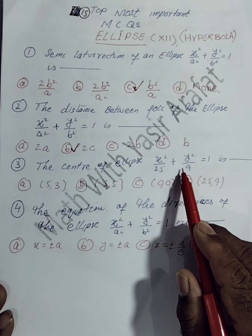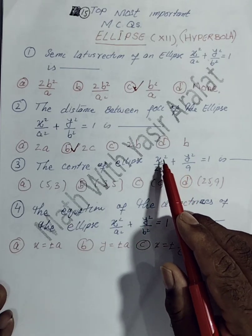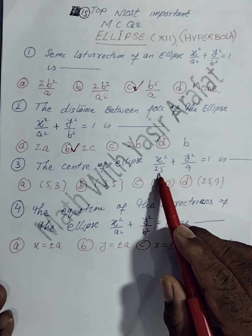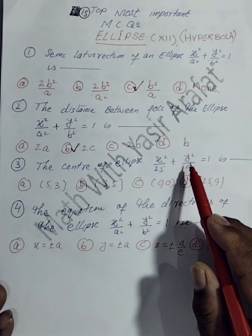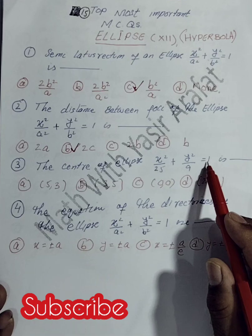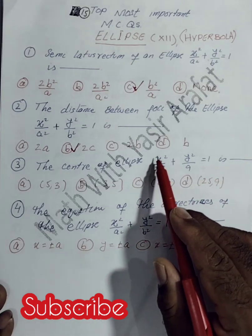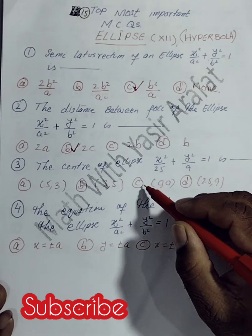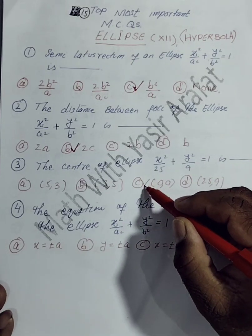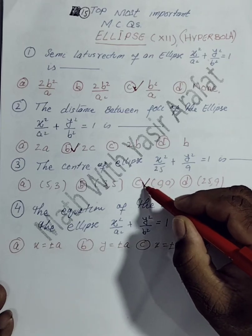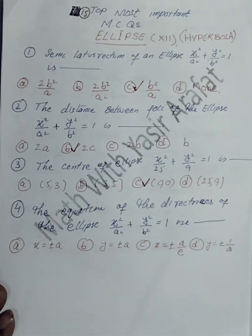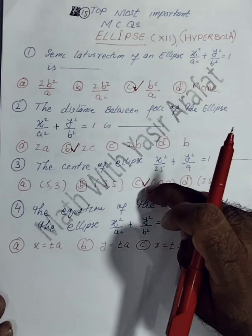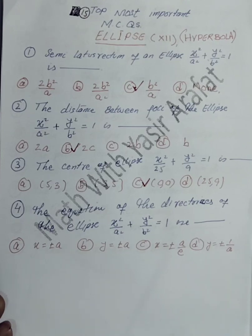For the third MCQ, the center of the ellipse x²/25 + y²/9 = 1. This ellipse has its center at the origin, that is (0, 0). So option C is correct.